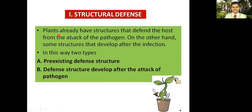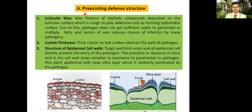Plants already have structures that defend the host from pathogen attack; on the other hand, some structures develop after infection. The first pre-existing defense structure involves cuticular wax, cuticle thickness, and the structure of the epidermis cell wall — we will discuss each one by one.